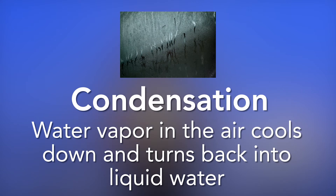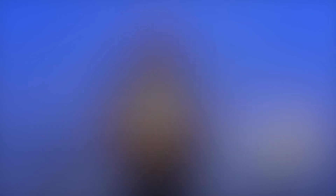Condensation is when the water vapor in the air cools down and turns back into liquid water. You see condensation on the outside of a glass of a really cold drink on a hot day. Precipitation is when the clouds become too heavy and the water in them — in the form of rain, snow, hail, or sleet — falls from the clouds in the sky.